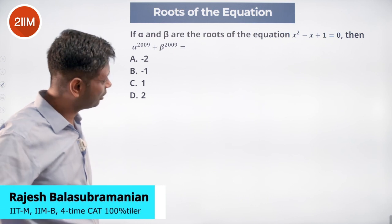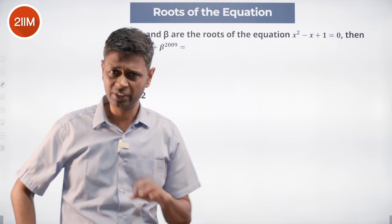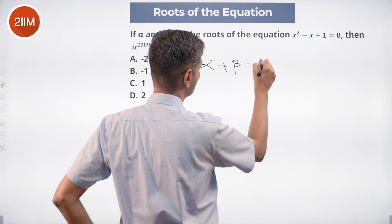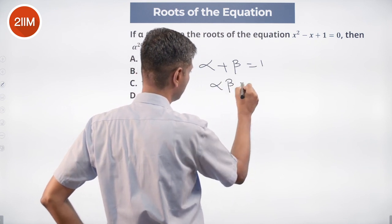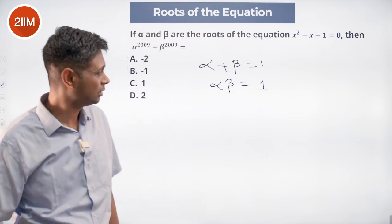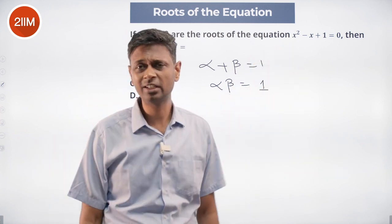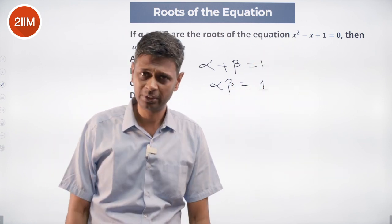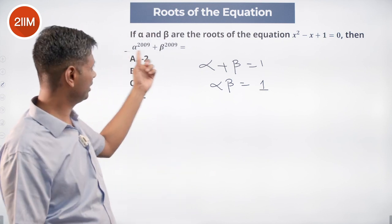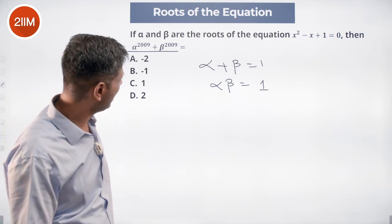Alpha and beta are the roots of the equation x² - x + 1 = 0. We need to find alpha^2009 + beta^2009. To start, sum of roots is alpha + beta = 1, and product of roots is alpha·beta = 1. Notice that b² - 4ac is negative, so there are no real roots — but that doesn't matter. We can still use alpha + beta = 1 and alpha·beta = 1.